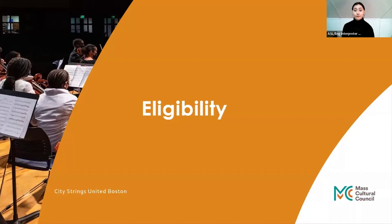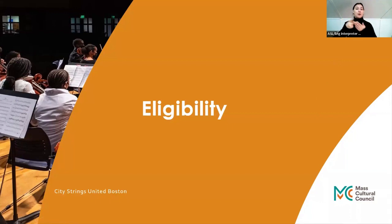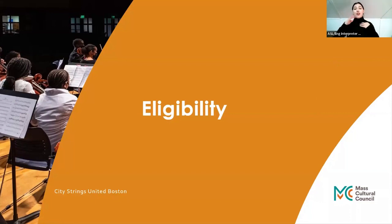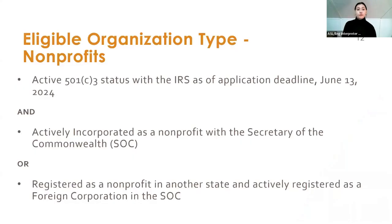Hello, my name is Kaylyn King. I am a program officer with the organization's team at Mass Cultural Council. I'm a 30-something white woman with shoulder-length blonde hair and a maroon top. My pronouns are she and her.